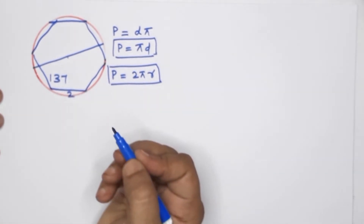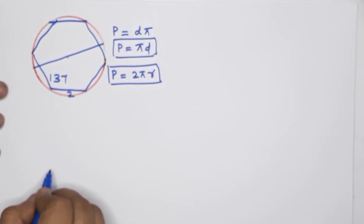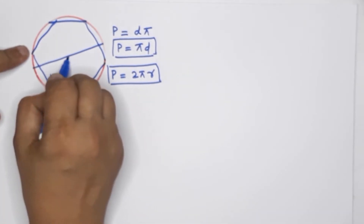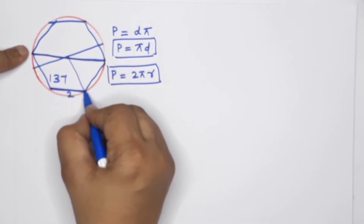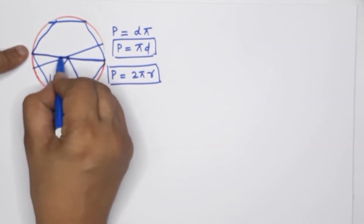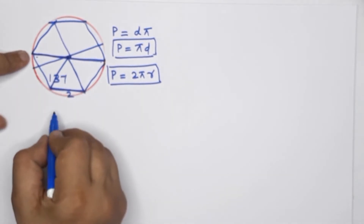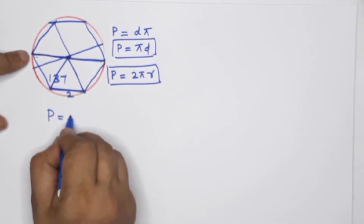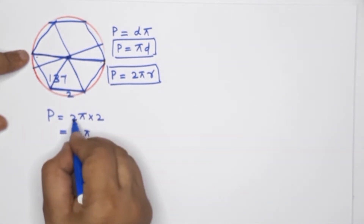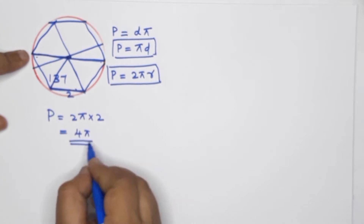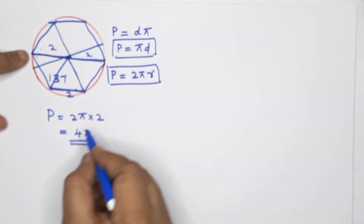This regular hexagon has a side of 2 cm. This is a circle. This is the central point. This is a joint. Because this is a circle, this is the radius. The radius equals 2, so the diameter is 4. Perimeter is equal to 2 pi r, which gives us 4 pi. So the angle is 2 plus 2, giving 4 pi.